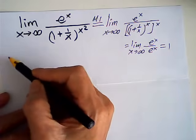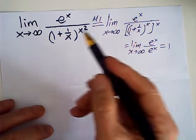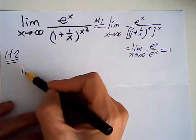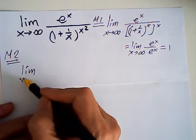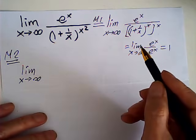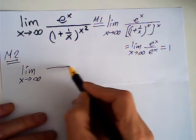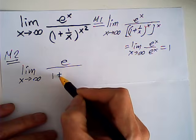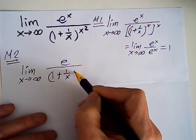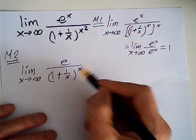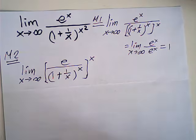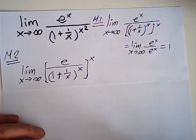Now method two. I write this limit as the limit x approaches infinity of e to the power of (1 + 1/x), and then e to the x, all together to x. I have to write very carefully because this is very, very sensitive. I think this is correct.